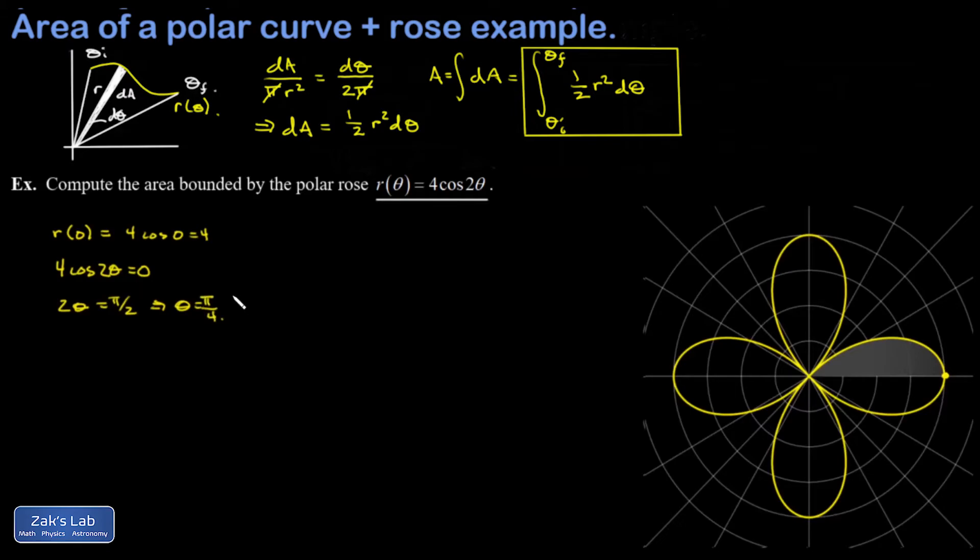Now I get my integral set up. I'm going to put the 8 out in front, so I'm intending to multiply this thing by 8 at the end. I'm integrating from zero to π/4 to get half of one petal. Inside this integral I have one-half r², but r is 4cos(2θ). Inside the integral I have half of 16, which is 8—I'm going to pull that out and I get 64 out in front. I have the integral of cos²(2θ).